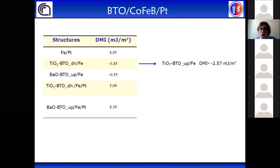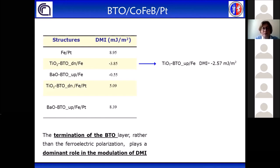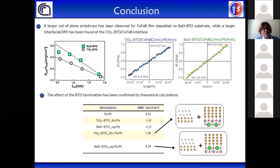Finally, we calculated the DMI for BTO titanium dioxide terminated with up polarization. We found that the DMI is slightly smaller with respect to the TiO₂ down-polarization case, but remains larger than for BTO barium oxide terminated. This indicates that the termination of the BTO has a dominant role in the modulation of the DMI, while the ferroelectric polarization gives only a small contribution. In conclusion, we found a larger out-of-plane anisotropy for cobalt iron boron film grown on BTO barium oxide terminated, while we found a larger interfacial DMI for BTO titanium dioxide terminated. These experimental results have been confirmed by theoretical calculations.